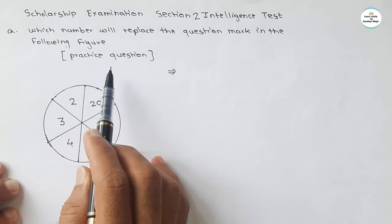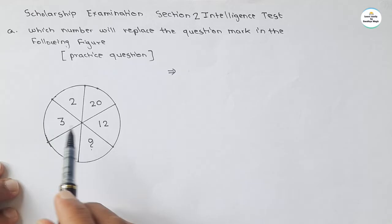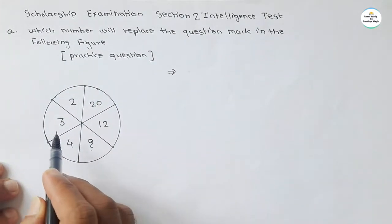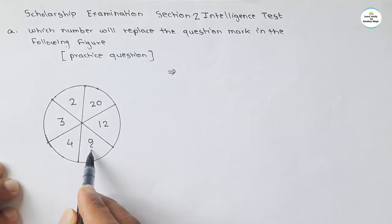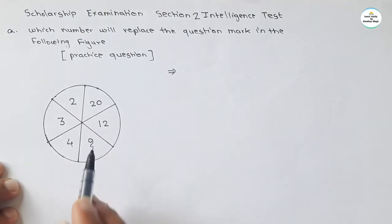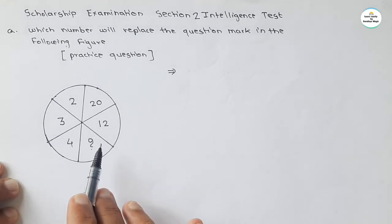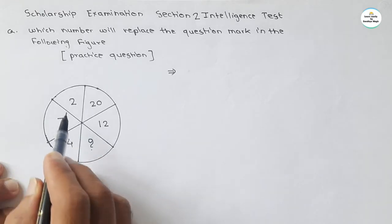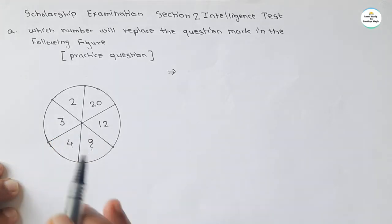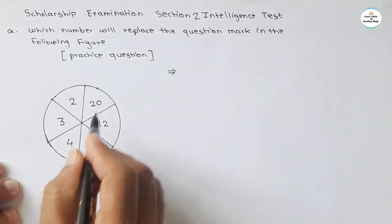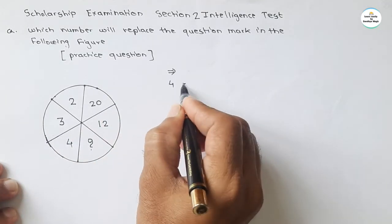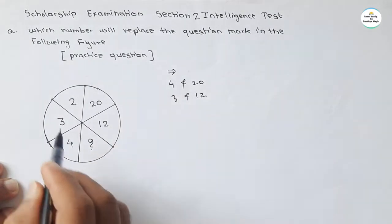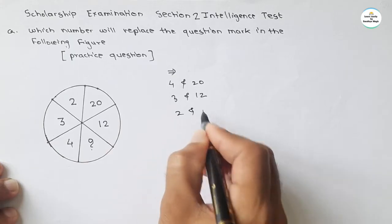Here was the practice question from the last video: which number will replace the question mark in the following figure? A circle is given with some digits and one question mark. We have to find the relation between opposite numbers. The opposite pairs are: 4 and 20, then 3 and 12, and lastly 2 and the question mark.